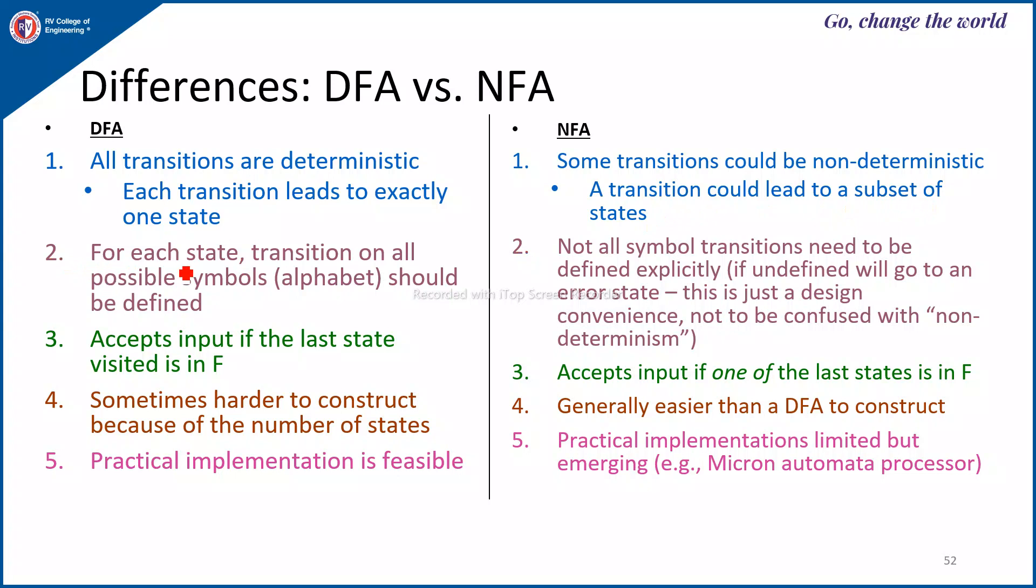Next DFA feature is that, for every state, transitions on all possible inputs should be defined. Whereas, here, not all symbol transitions need to be defined explicitly. DFA accepts the input if the last state visited is in F. Whereas, here, NFA accepts the input if one of the last states is in F. DFA construction is sometimes harder to construct because of the number of states. And, NFA construction is generally easier than DFA.